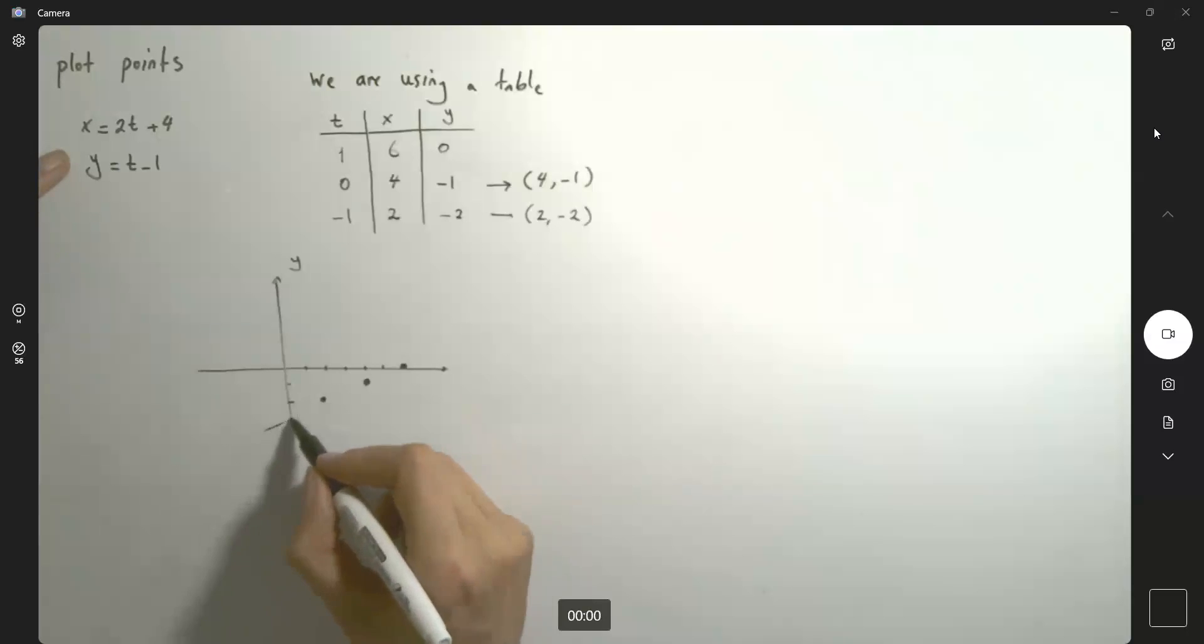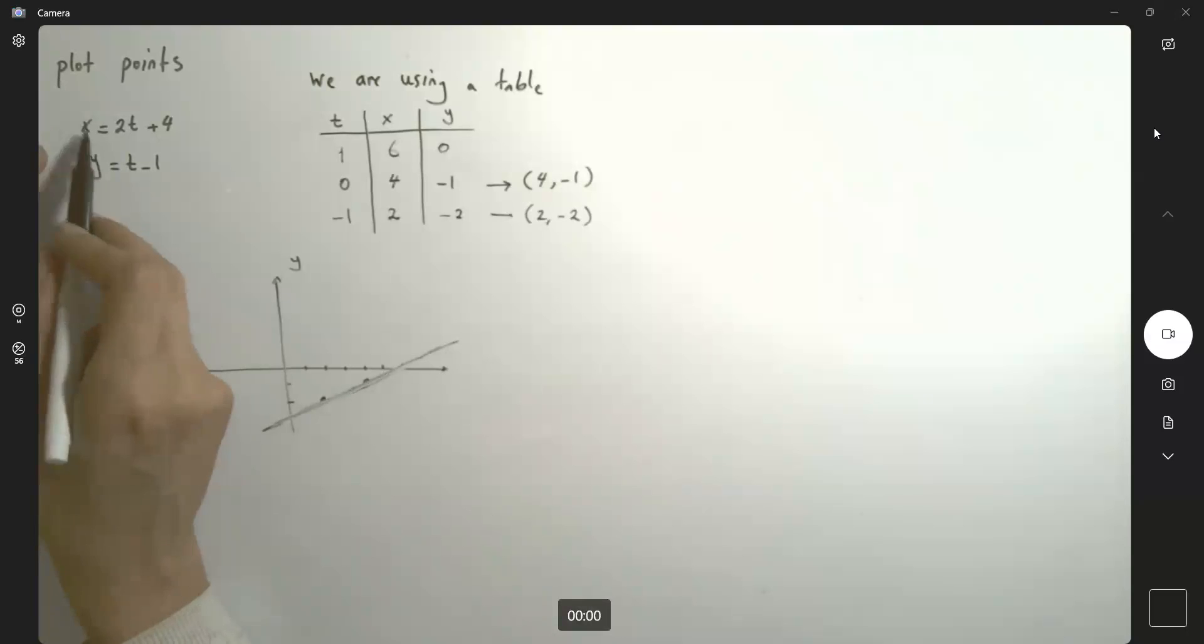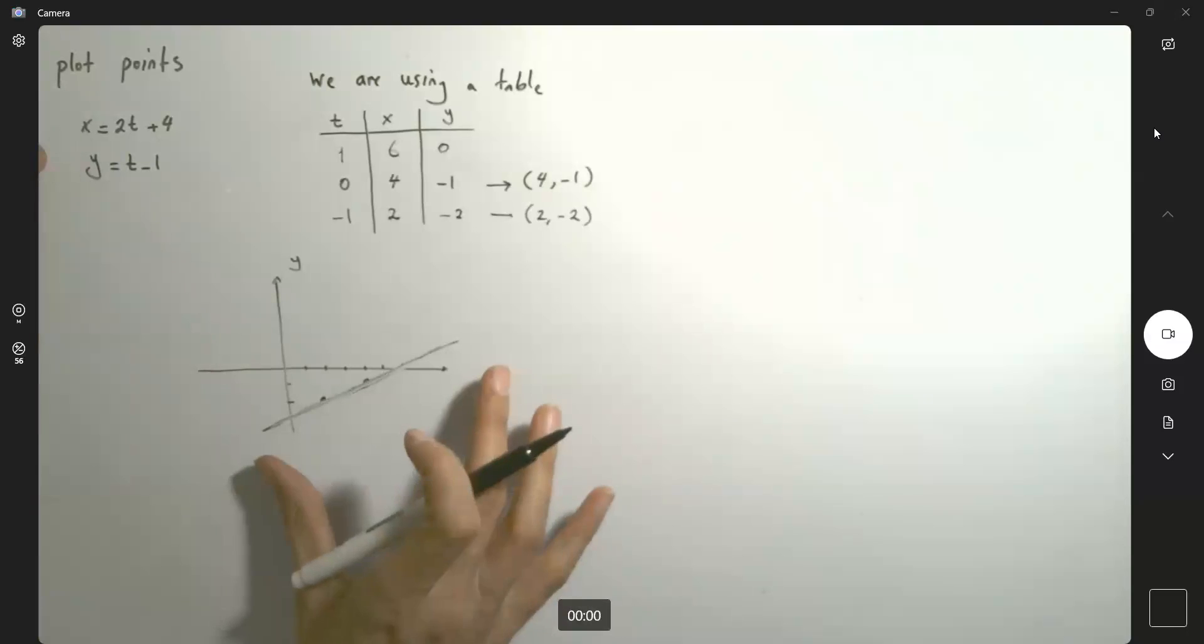So this is a line which is moving in increasing direction. This parametric equation represents a line. So at the end of your work, write down something.